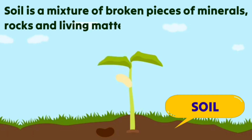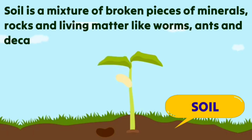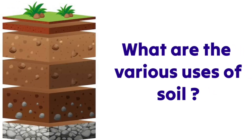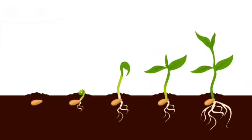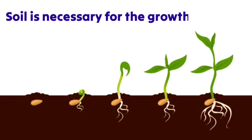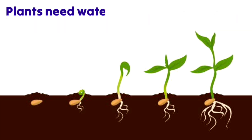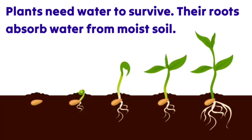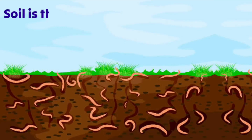Soil also contains living matter like worms, ants, and decaying plants and animals. Soil is necessary for the growth of plants. Plants need water to survive, and their roots absorb water from moist soil.